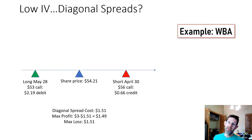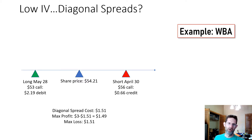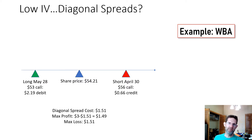Here's an example of a diagonal spread. To enter the trade, you buy a long option — in this case a couple of dollars in the money with about 50 days of expiration for $2.19. Then I sell an out-of-the-money call expiring in 21 days for a $0.66 credit to partially defray the cost of the long option. The total cost of the spread is $1.51. The max profit is the width of the strikes, $3, minus the cost of $1.51, for a total max profit of $1.49. The max loss is simply the cost of the spread, or $1.51.